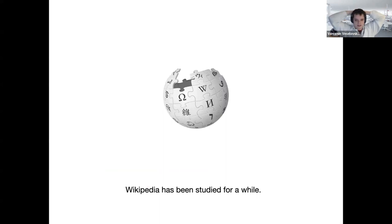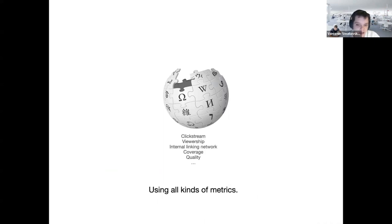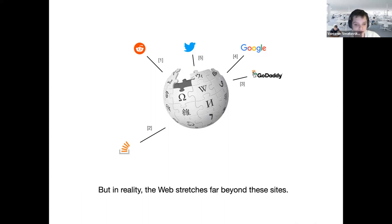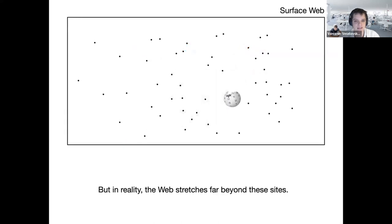To begin, a lot of studies on Wikipedia have focused on studying Wikipedia as an individual entity. There have been all kinds of metrics used: the clickstream data, viewership, internal linking network, coverage, quality, bias, and so on. Some other studies have begun to examine Wikipedia's relationship with the web more broadly — looking at the value Wikipedia provides sites like Reddit and Stack Overflow, Wikipedia reuse on Twitter, and its interaction with search engines. But in reality, the web stretches a lot farther than these sites and really represents a huge, rich network of different sites that link to one another.